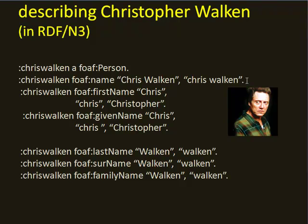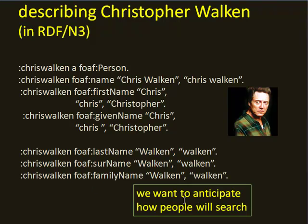You want your data to be discoverable by other people on the web. Chris Walken has a first name of 'Chris', also 'chris' lowercase, or 'Christopher'. He has a given name of 'Chris', 'chris', and 'Christopher', a last name of 'Walken' and 'walken', a surname of 'Walken' and 'walken', and a family name of 'Walken' and 'walken'. The bottom line is we want to anticipate how people will search, and that's why we provide all these options when we describe a FOAF person.